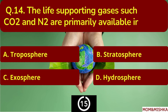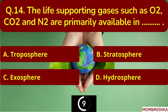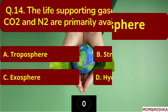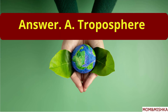The life-supporting gases such as oxygen, carbon dioxide, and nitrogen are primarily available in which layer? In the troposphere — option A.